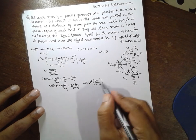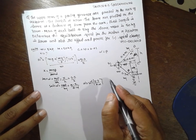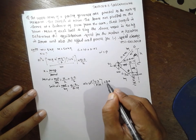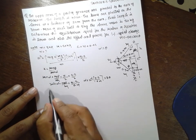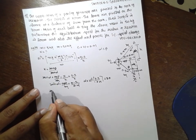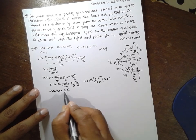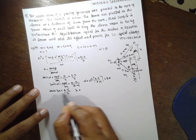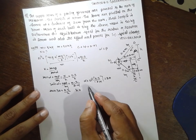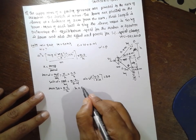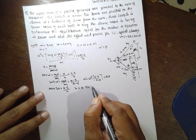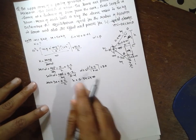Substitute this 30 in the tan. Tan 30 is equal to 0.2 divided by h. Then the h will be cross multiplied. The h will be 0.3464 meter.